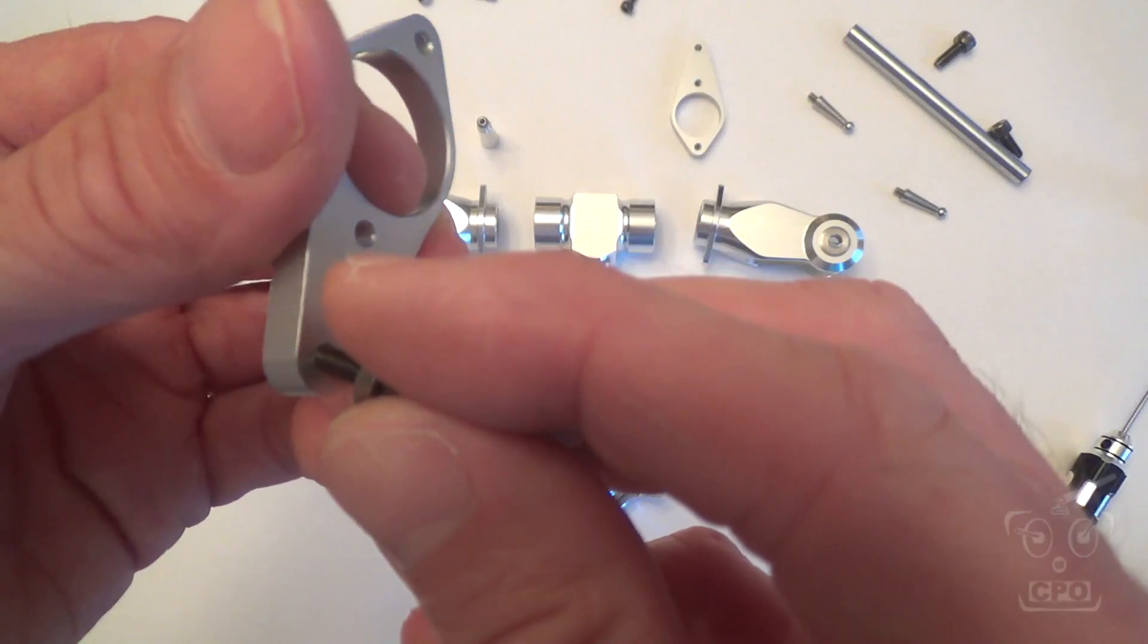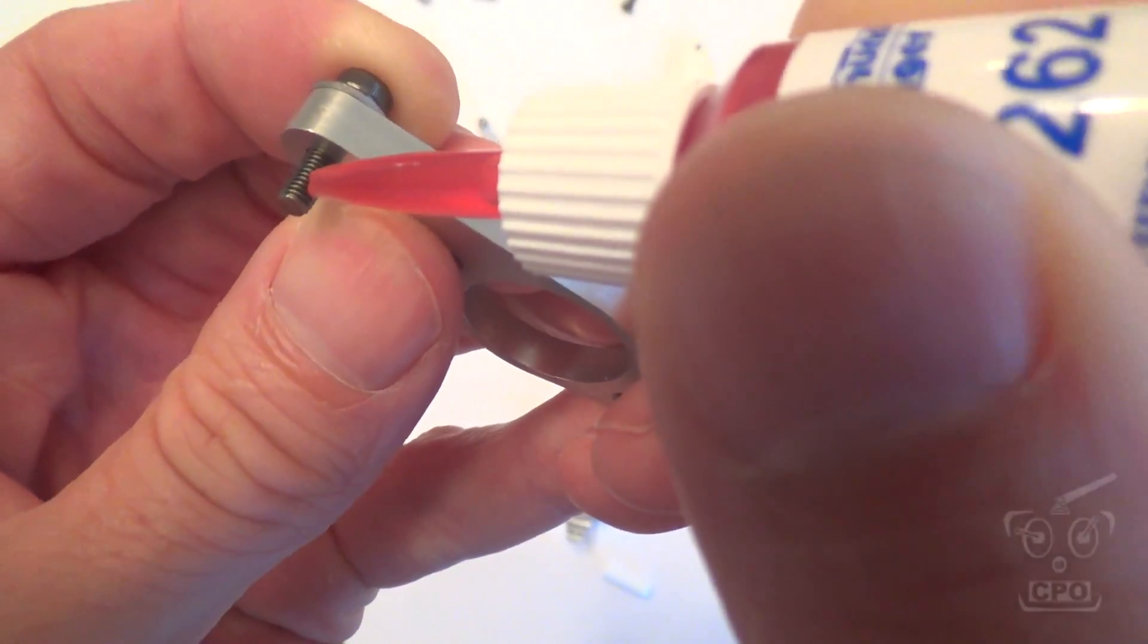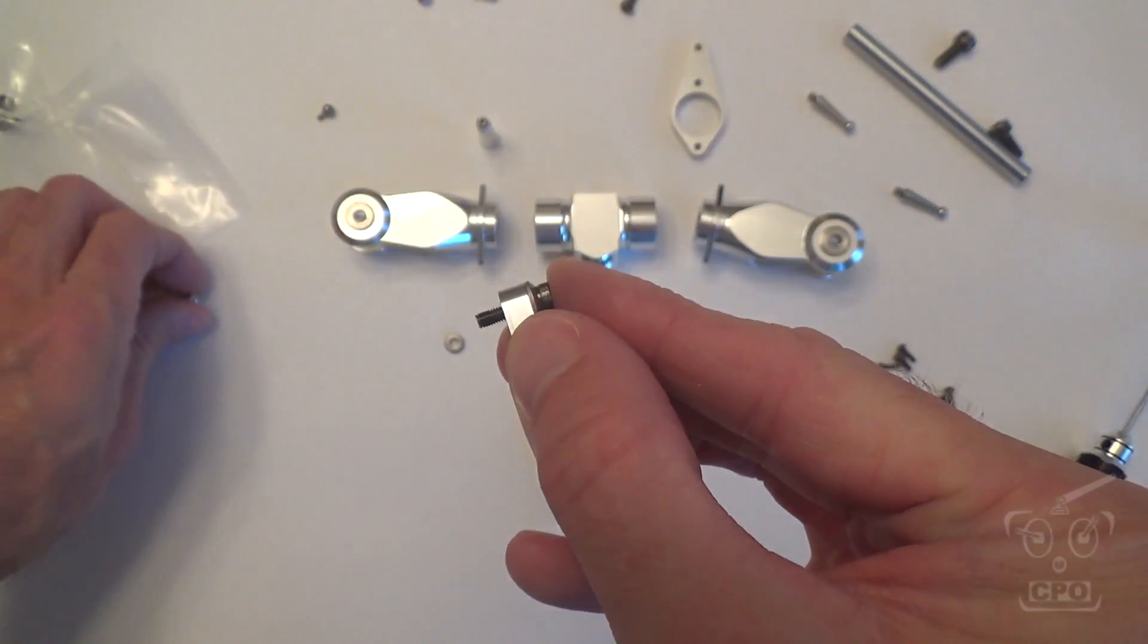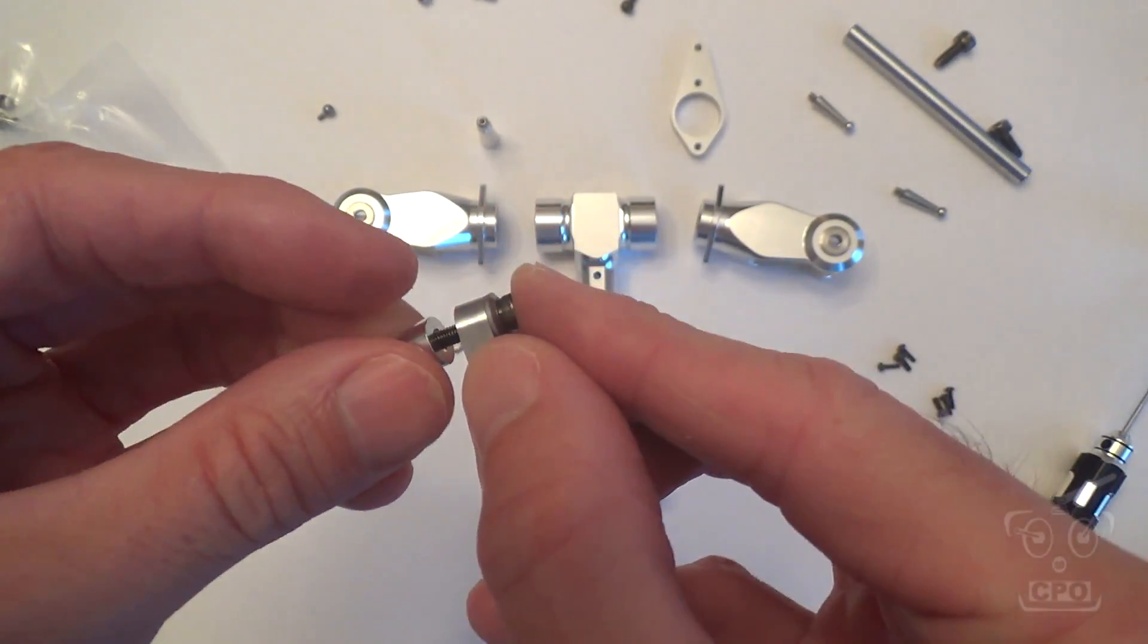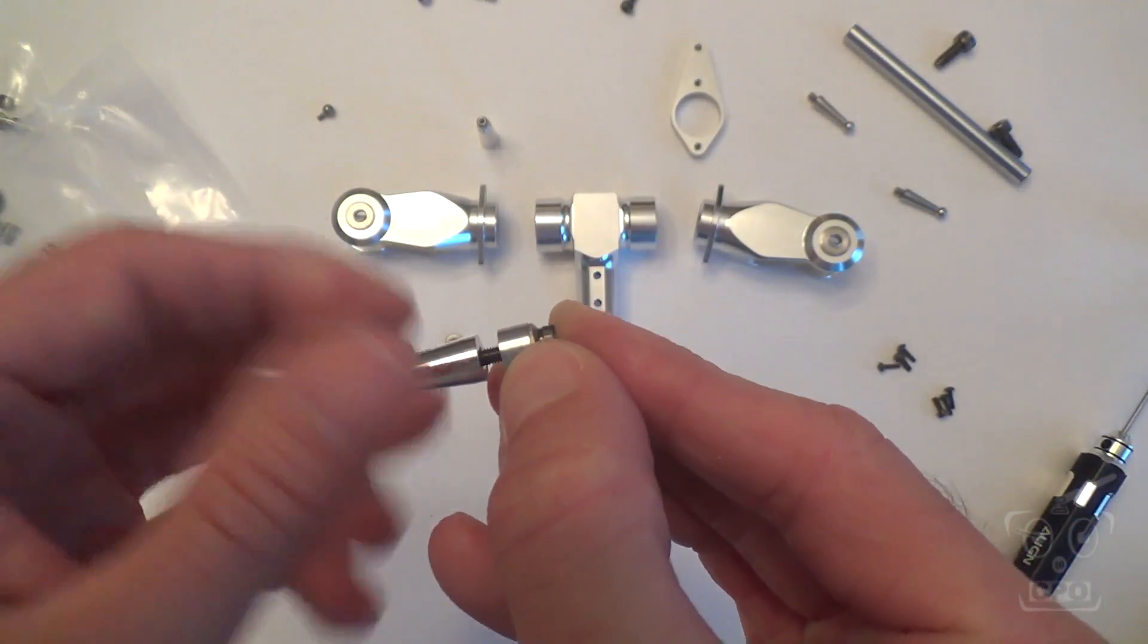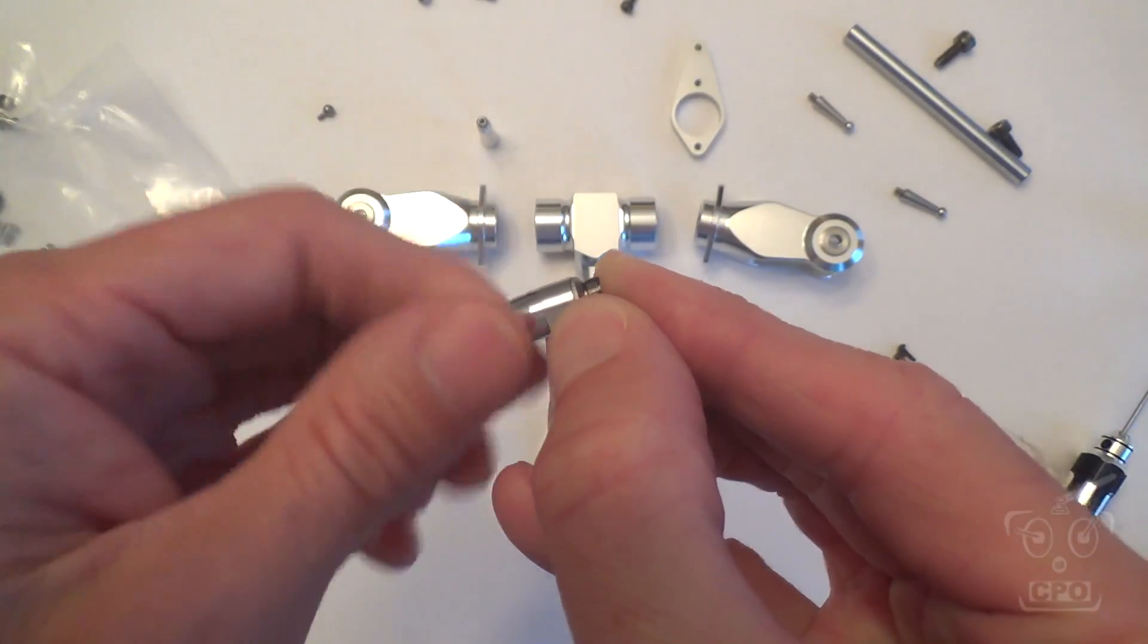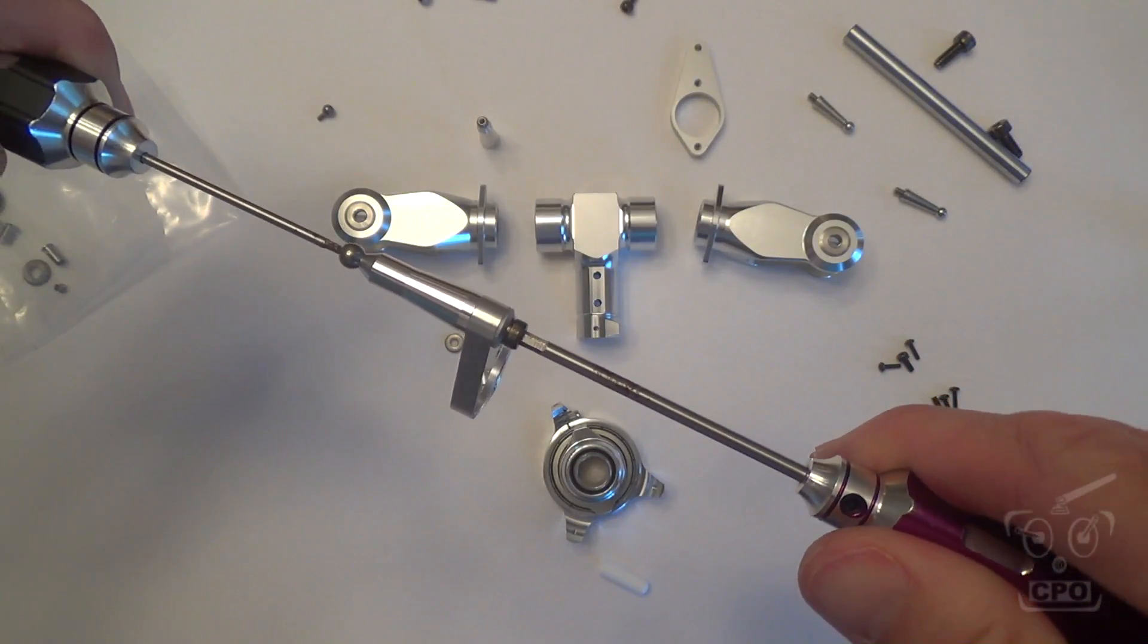All right, we're going to get this rotor grip lever on and again, a little bit of thread lock and then get the post on there and just tighten it down. Snug, not overly tight.